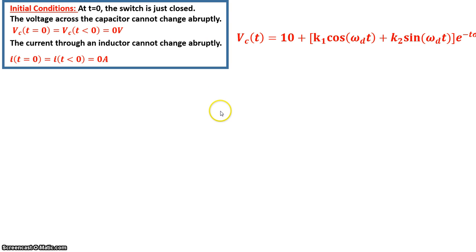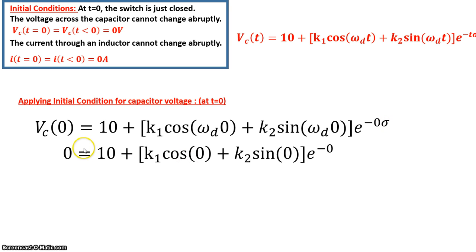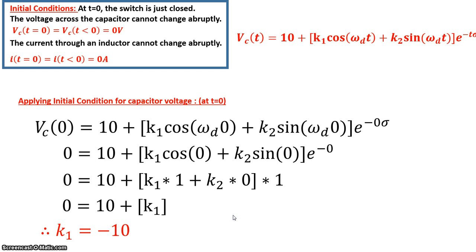Applying the initial condition for capacitor voltage at t equals 0, we substitute t = 0 into the V_C expression. V_C(0) = 10 + k₁ cos(0) + k₂ sin(0) · e^0. Since cos(0) = 1, sin(0) = 0, and e^0 = 1, this simplifies to 10 + k₁ = 0, giving us k₁ = −10.